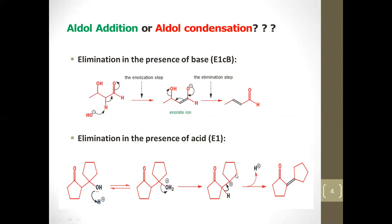A proton can be removed from several positions, but the double bond conjugated with the carbonyl group is more stable due to resonance. So only the hydrogen that gives the conjugated alpha-beta unsaturated carbonyl compound is removed. In this way a water molecule is eliminated, and this is aldol condensation under acid catalysis.